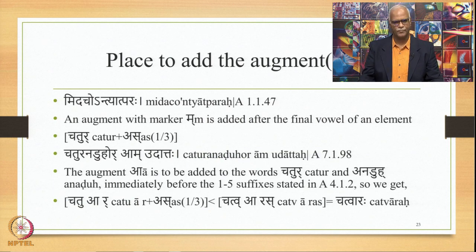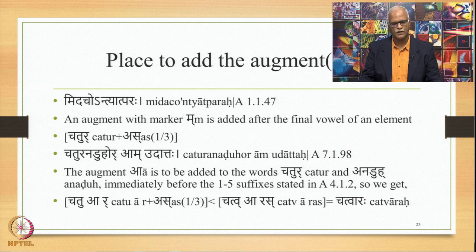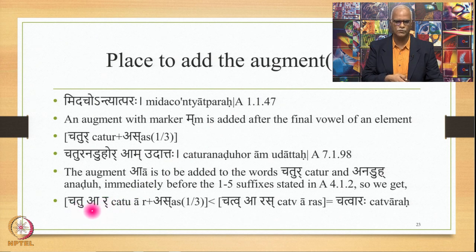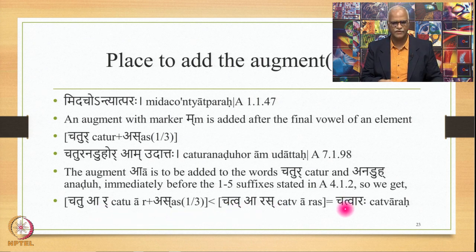The second sutra on augment placement is Mida Chon Tyat Paraha 1147: an augment with marker Ma is added after the final vowel of an element. For example, Chatur + As (1.3) and the Sutra Chatur Ana Duhor Am Udattaha prescribes adding augment A to Chatur immediately before the first five suffixes stated in 4.1.2. By 1147, A is added after the final vowel U of Chatur, giving Chatu-A-R + As. Then sandhi applies: U becomes V, giving Chatvaras, and finally Chatvaraha.